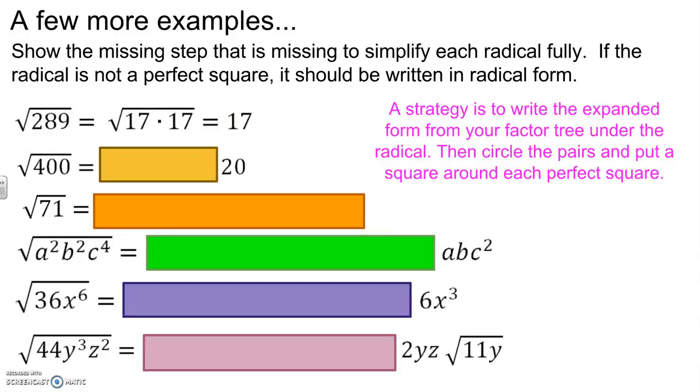So another strategy is when you break it apart here, you might recognize that you have a pair, which is a pair that factors. So 289 was a perfect square. And so that pair of 17s factors out to 17 here.